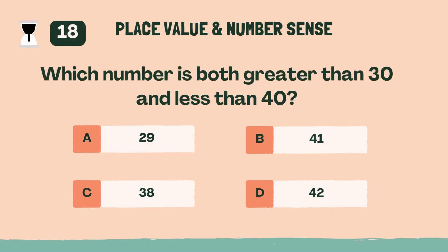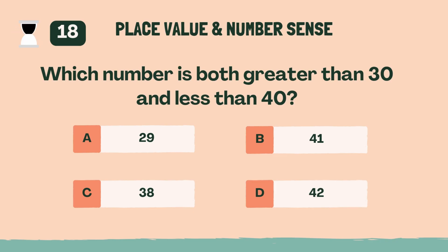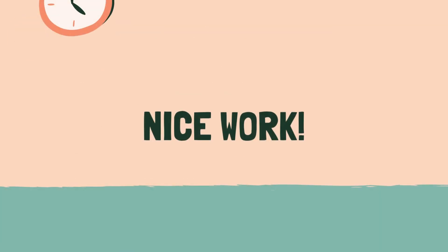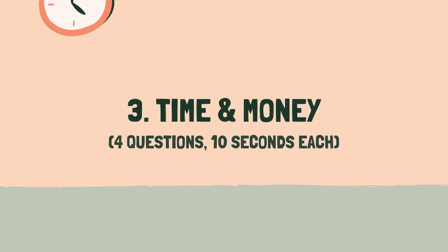Which number is both greater than 30 and less than 40? C, 38. Nice work. Time for the next category.